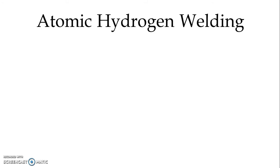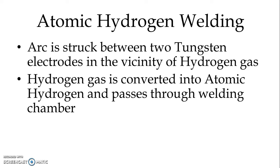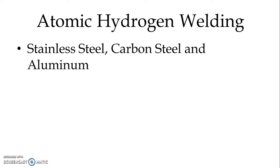The next is atomic hydrogen welding. In this process, arc is struck between two tungsten electrodes in the vicinity of hydrogen gas. Hydrogen gas is converted into atomic hydrogen and it passes through the welding chamber. Again it comes to molecular form emitting a large amount of heat. We use atomic hydrogen welding for stainless steel, carbon steel, and aluminum welding.